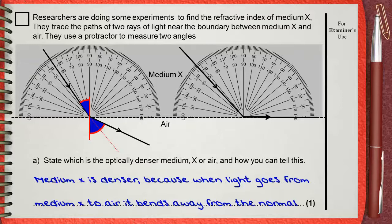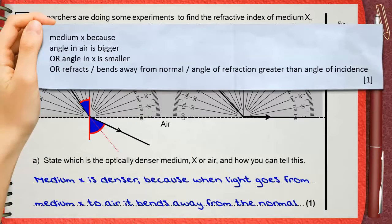Many things you can say for explaining this. One of them is that you can say angle in air is bigger. You can also explain that angle in X is smaller. Another option is you can say that the ray refracts or bends away from the normal, or angle of refraction is greater than the angle of incidence. Only one explanation is needed and this is for one mark.